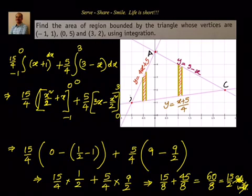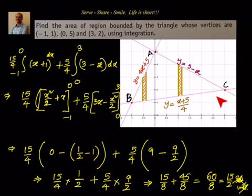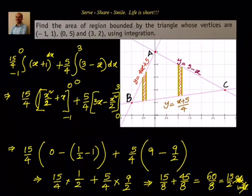We can also cross-check this using Heron's formula with the given coordinates. To summarize: given vertices A, B, C, we found equations of AB, BC, and AC. The vertical strip height from -1 to 0 is AB minus BC, and from 0 to 3 is AC minus BC. After integration the area of triangle ABC is 15/2 square units. Thanks for your time and support — catch you in the next session. Keep smiling and sharing, bye!